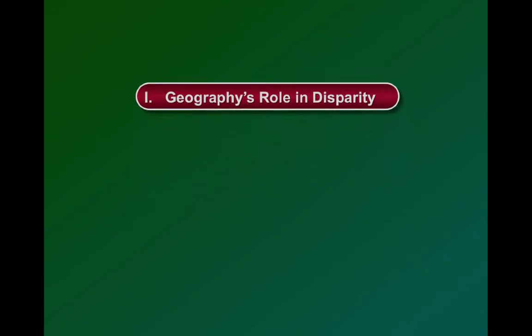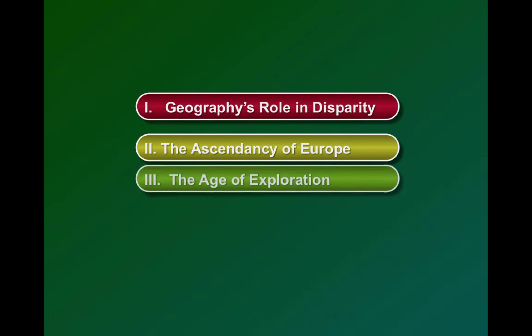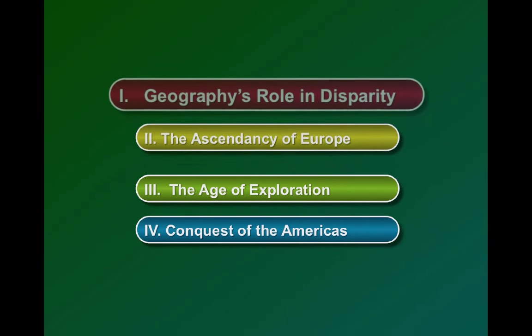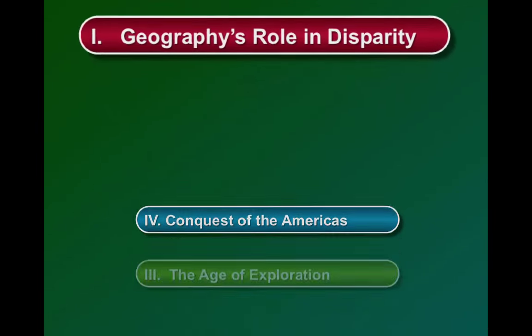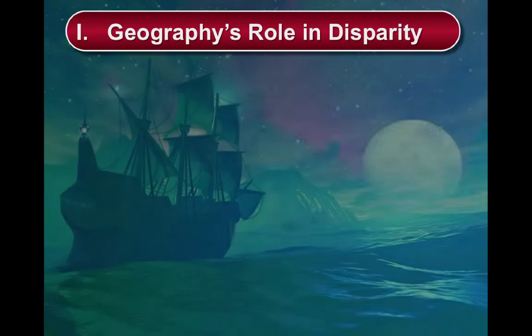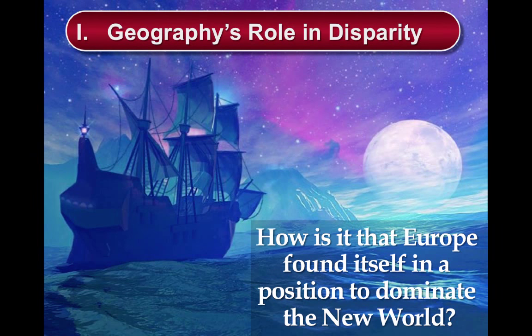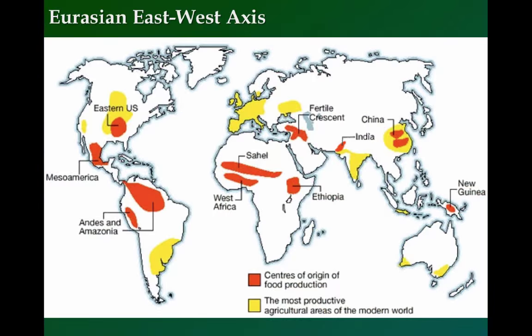In this first video of the new unit, we are going to take a look at geography's role in disparity and ask ourselves this essential question: how is it that Europe found itself in a position to dominate the new world? Europe, an area in which agriculture did not originate, became the most dominant region in the world by the 1500s. So how did they do it?